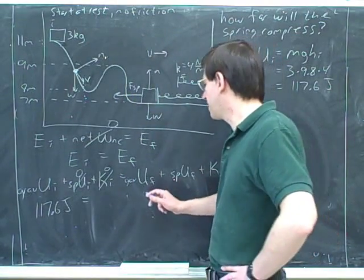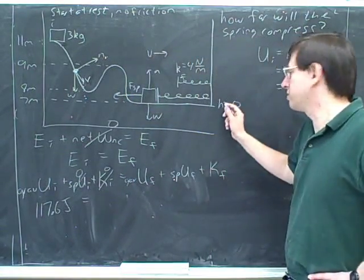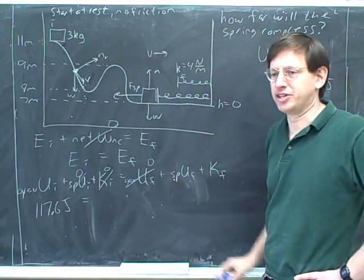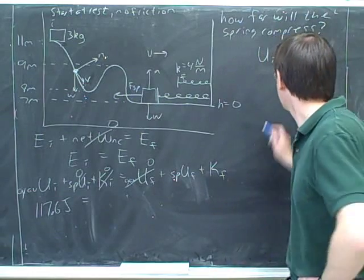All right. And now, over here, I think you figured out that because you chose this to be your height of zero, there's going to be no gravitational potential energy, only the spring potential energy.